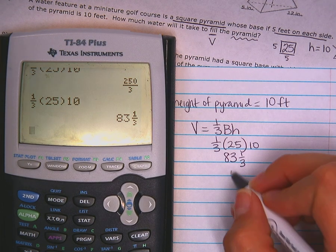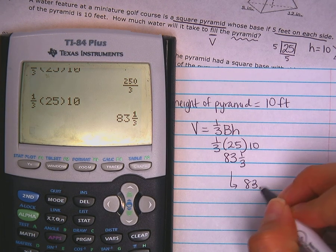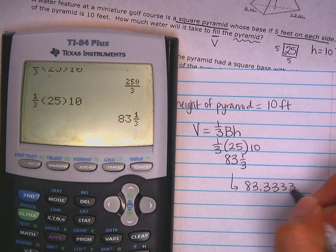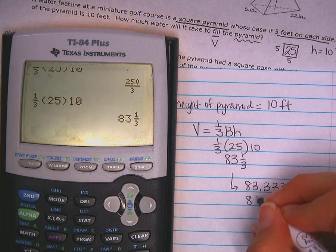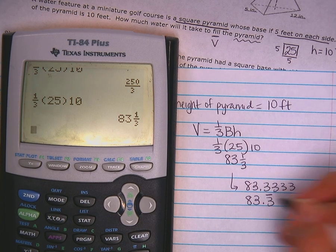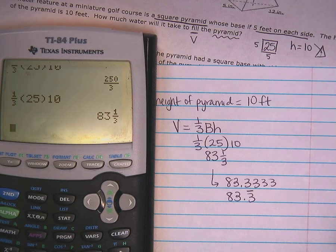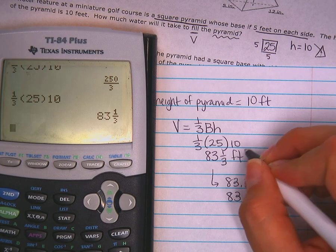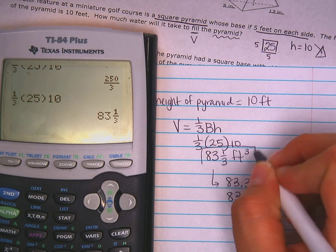You may have also gotten a decimal that said 83.333, on and on and on. That would just mean it's 83.3 with the repeating bar. What are my units? Feet cubed. Alright.